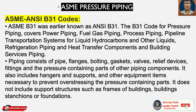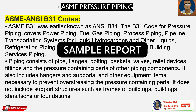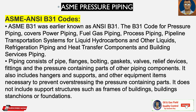ASME B31 codes — ASME B31 was earlier known as ANSI B31. The B31 code for pressure piping covers power piping, fuel gas piping, process piping, pipeline transportation systems for liquid hydrocarbons and other liquids, refrigeration piping and heat transfer components, and building services piping. Piping consists of pipe, flanges, bolting, gaskets, valves, relief devices, fittings, and pressure containing parts of other piping components. It also includes hangers and supports and other equipment necessary to prevent overstressing the pressure containing parts. It does not include support structures such as frames of buildings, stanchions, and foundations.